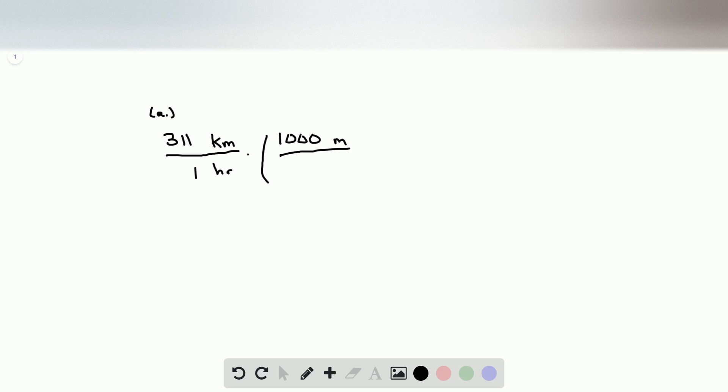1000 meters in 1 kilometer. This will cancel the kilometers and leave us with meters. And then we want to cancel the hours so they go in the numerator. We want to turn them into seconds, and 1 hour is 3600 seconds. When we multiply this out, we'll get 86.4 meters per second.